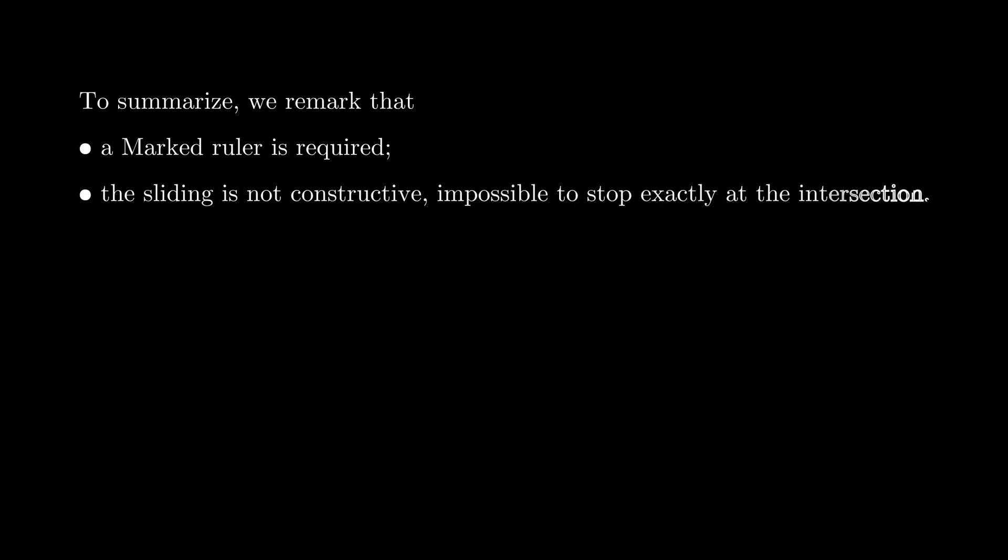To summarize, we see that using a marked ruler solves the problem. Even though the sliding ruler is not really constructible in the sense that we can never stop exactly at the intersection. But still, this provides us a practical way to approximate a trisection.